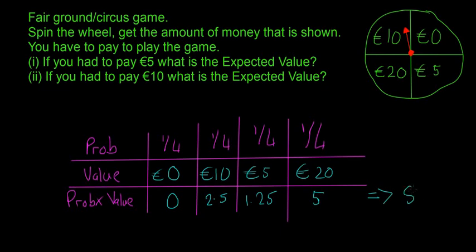So our total here, if we add all of these together, we will get 8.75. So this isn't the expected value just yet, because in each case we have to pay either 5 euro or 10 euro, and so we need to factor that in.